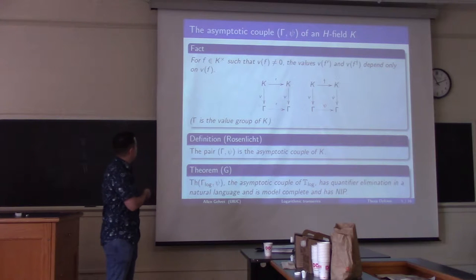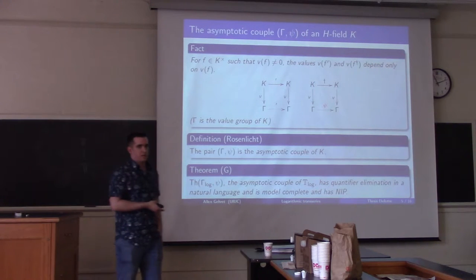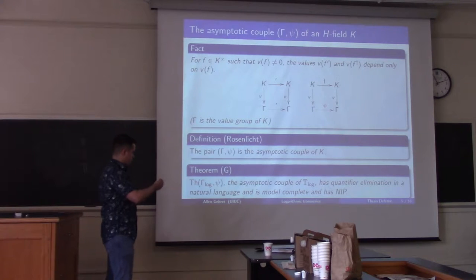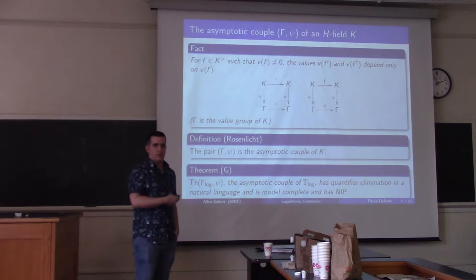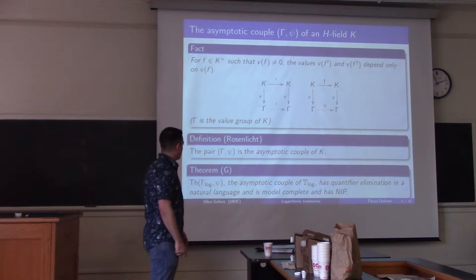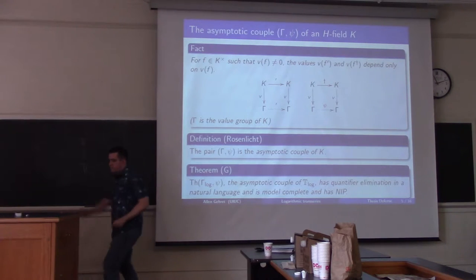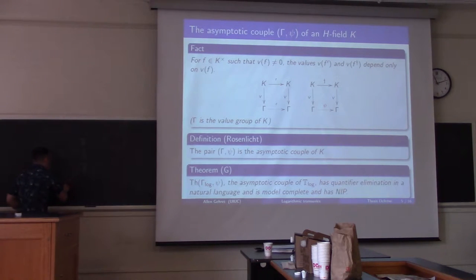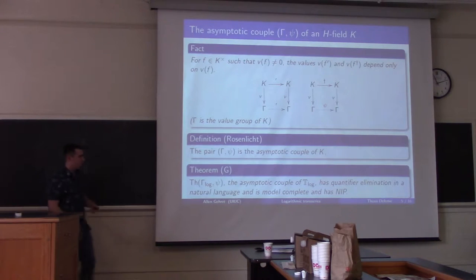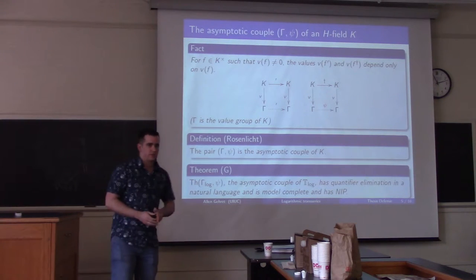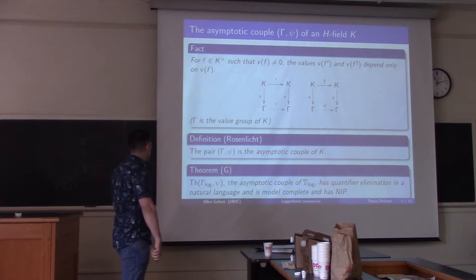We have a pretty good understanding of the model theory of the asymptotic couple. I found a natural language to study this in and proved that it has quantifier elimination, it's model complete, and it also has NIP, along with various other properties. Associated to T-log there's an asymptotic couple, and the asymptotic couple is something we now understand rather well. We want to turn our attention to T-log itself.